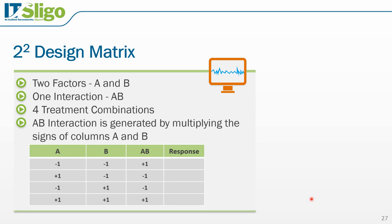Let's take the example of a 2 to the power of 2 experiment. Here we have two factors A and B, and one interaction AB, with four treatment combinations. The column for factor A has two levels, minus and plus, similarly for factor B. The interaction AB also has a plus and a minus. Plus 1 for AB is determined by multiplying the coded values: minus 1 times minus 1 equals plus 1; plus 1 times minus 1 equals minus 1; minus 1 times plus 1 equals minus 1; and plus 1 times plus 1 equals plus 1. This is our design matrix for the 2 to the power of 2 experiment.